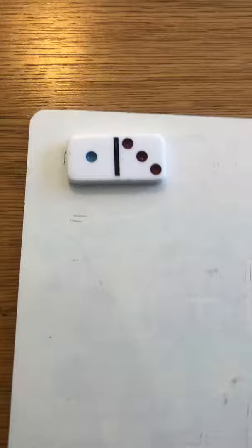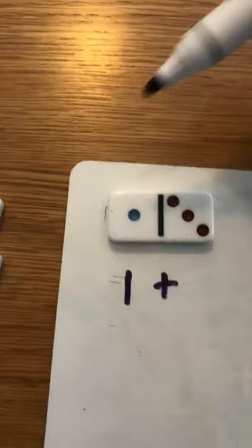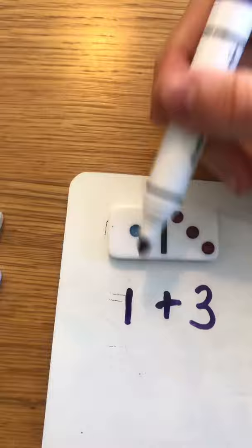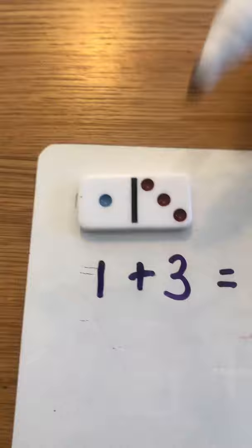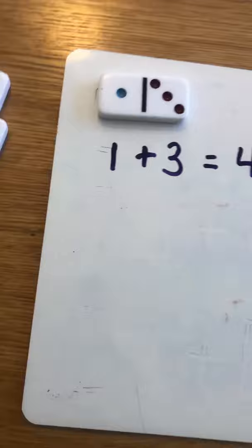So I'm going to write one plus, and over on this side I have three. So I have one dot here so I've written number one and I have three dots here so I've written number three and all together that makes let's count them one two three four. So one and three make four.